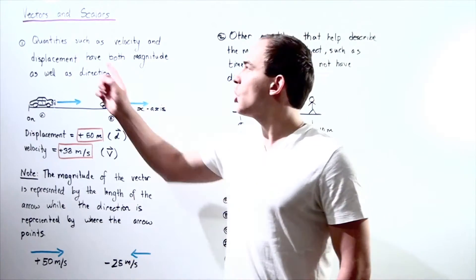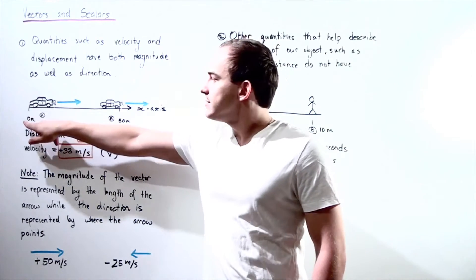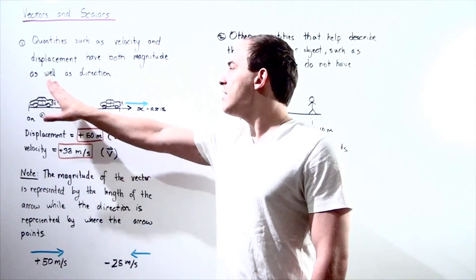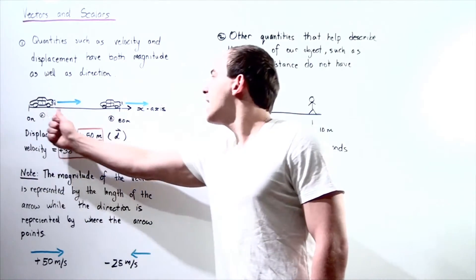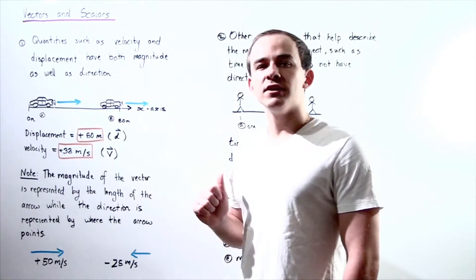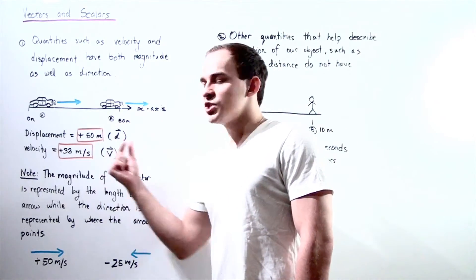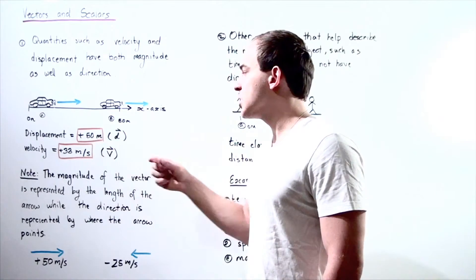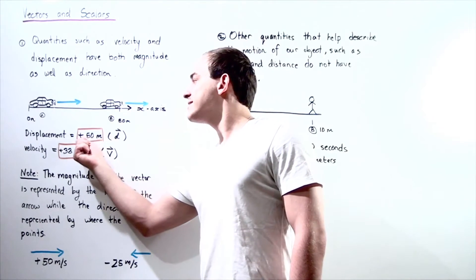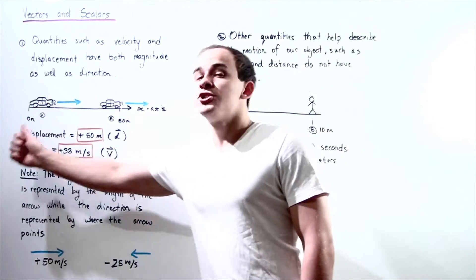These quantities are known as vectors. Suppose we have a moving car that moves from initial point A at 0 meters along the x-axis to a final point B, 50 meters away from our initial point, moving in the positive direction along the x-axis to the right. The displacement of the object is positive 50 — the 50 represents the magnitude and the sign gives the direction, meaning the object is moving to the right.